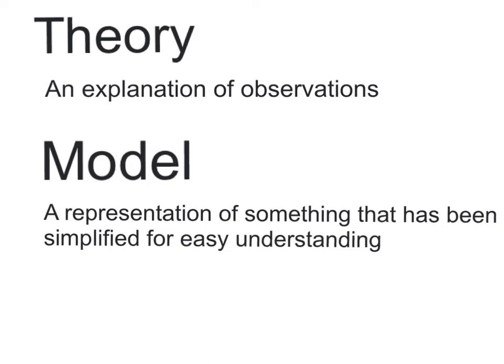Models and theories go together. We've been working with black boxes in class, and as we investigated the box, we developed a theory and then the model. Theories are explanations of observations. So you make a whole bunch of observations about a black box, and then you attempt to explain what you've seen. Because it's a black box, you can never be 100% sure that your theory is correct, but you can gain more and more confidence in your theory.